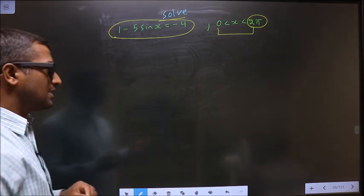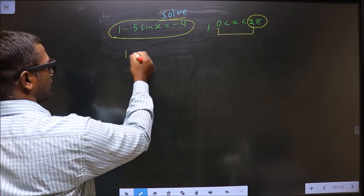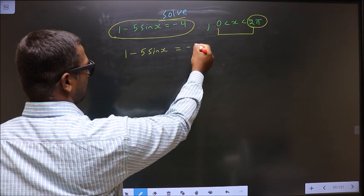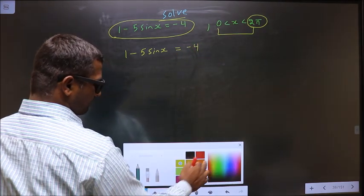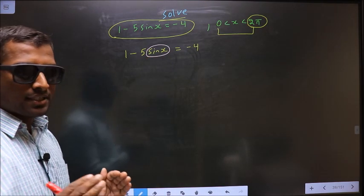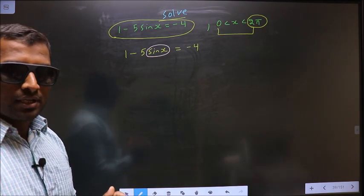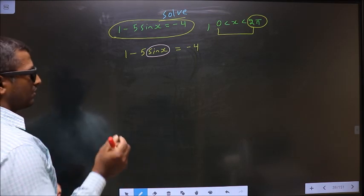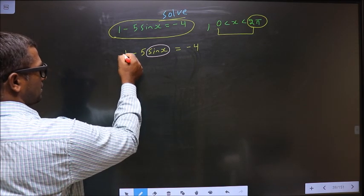Now, first the given equation is 1 minus 5 sin x equal to minus 4. Here you have sin x, so first you should make sin x the subject. Remove all the connections connected to sin x one by one. First remove this plus 1.